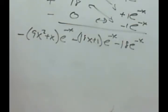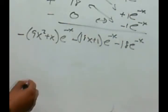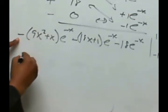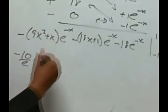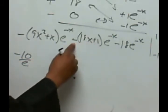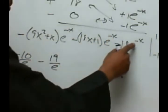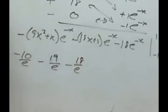Now we're putting in 1 and negative 1. Putting 1 in for x: 9 plus 1 which is 10, so that'll be negative 10 times e to the negative 1, which is all over e. Putting 1 here gives me 18 plus 1 which is 19, so negative 19 over e. And a 1 here gives e to the negative 1, so that's minus 18 over e. Then putting negative 1 in: that gives me 9 minus 1 which is 8, so negative 8 times e to the first power. Putting negative 1 in the next term gives negative 18 plus 1 which is negative 17, but the sign makes it positive 17 times e. And this will be negative 18 times e.